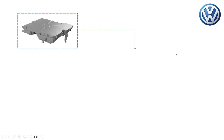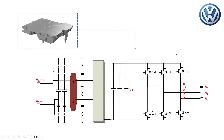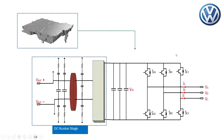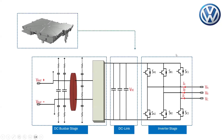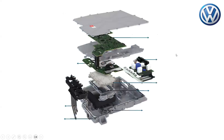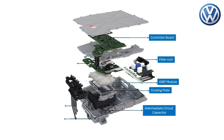After understanding the structure of the inverter topology and its main stages — the DC bus bar stage, DC link stage, and the inverter stage — the inverter is disassembled to reveal its controller board, filter unit, IGBT module, cooling plate, intermediate circuit capacitor, gate driver board, power rails, and inverter housing.